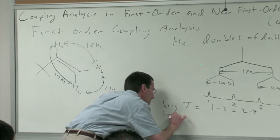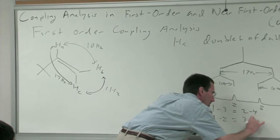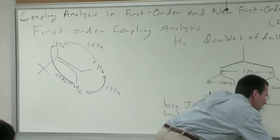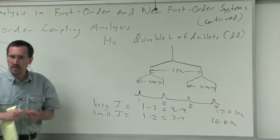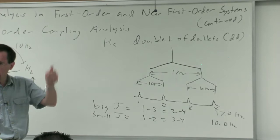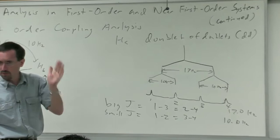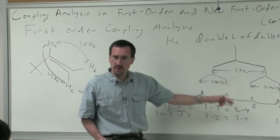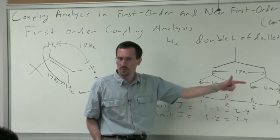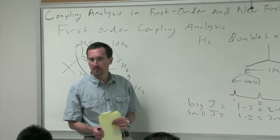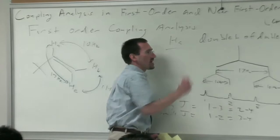The small J is 1 minus 2 and 3 minus 4, averaged to get about 10 hertz. On many homework problems I include a peak printout - you can highlight it, paste into Excel, split data using text-to-columns, then take 1 minus 3, 2 minus 4, 1 minus 2, 3 minus 4 and average them to extract your coupling constant without pencil-and-paper calculations. All right, so this is HA.